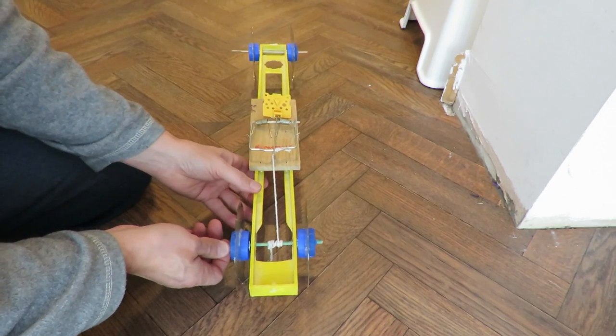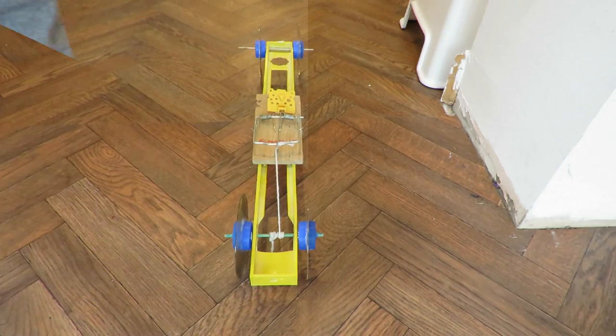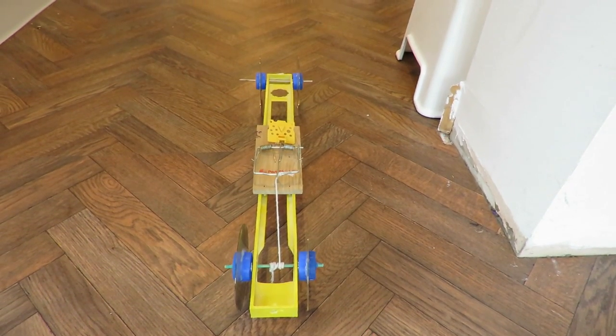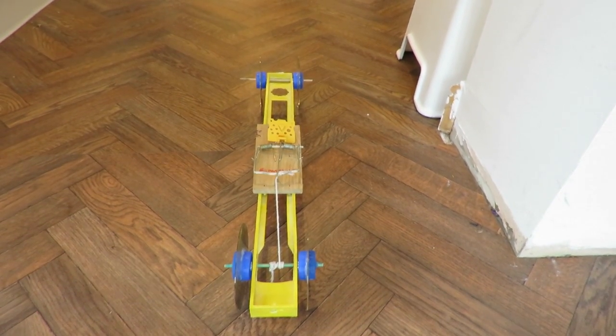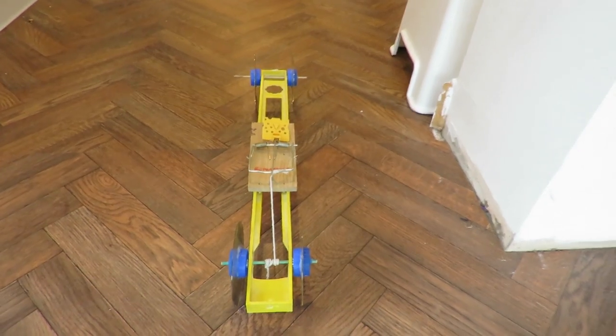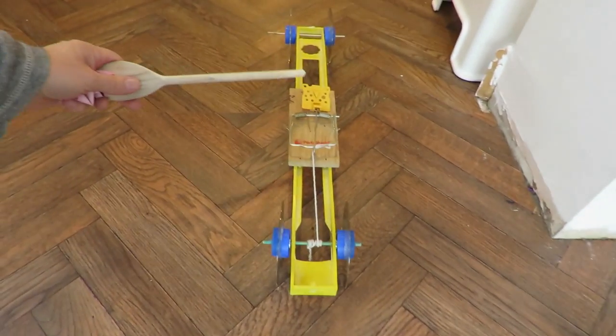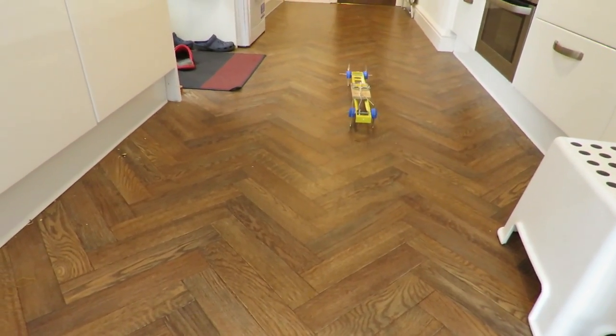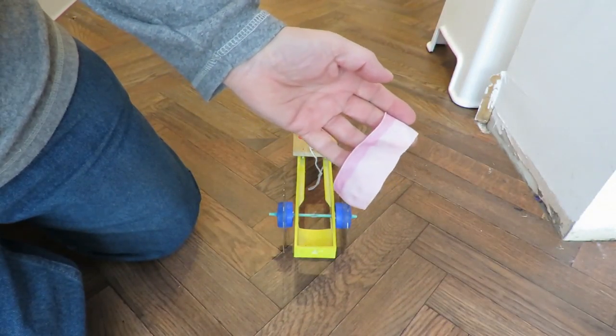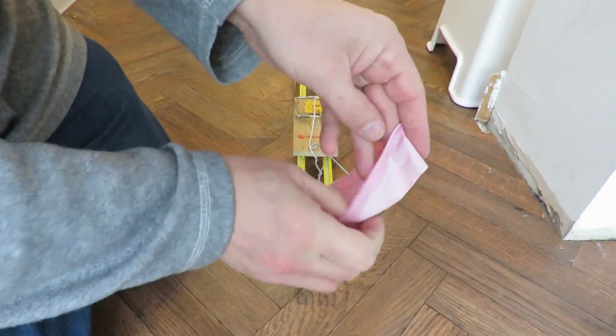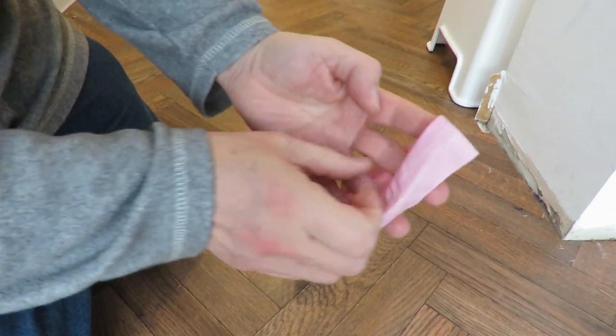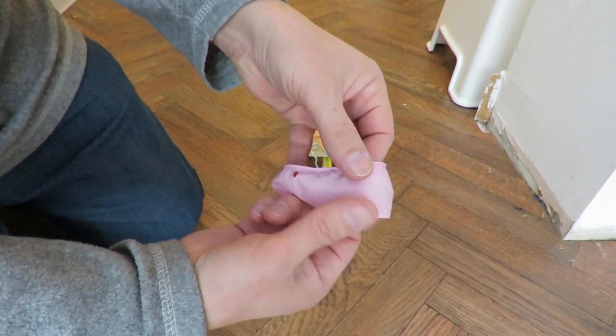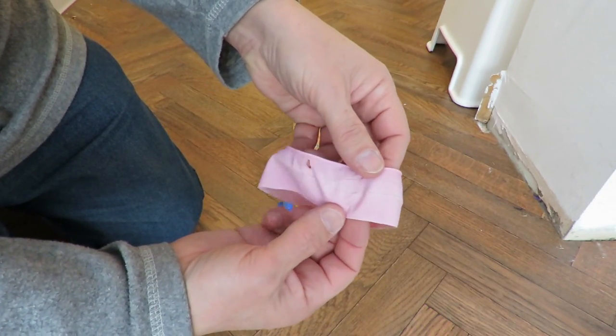There we are. I'll grab the camera so we can actually watch it go. Okay, so wheel spin. This is a strip cut from a rubber glove. I've used it before - you can see it's got wear marks around the middle of it.